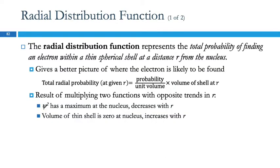So they use the radial distribution function, the total probability of finding an electron within a thin spherical shell at a distance r from the nucleus. That sounds like calculus, doesn't it? What happens here is we've got this one trend with high probability at the nucleus, and this other trend with zero probability at the nucleus, and you multiply them together and you get something that works better.